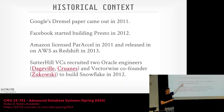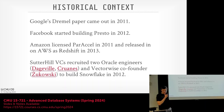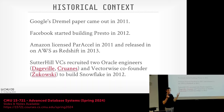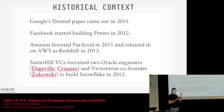Snowflake was written from scratch while Redshift was based on ParAccel, which was basically going bankrupt hoping Amazon would acquire them — Amazon just acquired the source license instead. Around this same time, a VC firm out of Silicon Valley called Sutter Hill decided to build a new cloud-native database startup. They brought together two prominent Oracle engineers and Marcin Zukowski, the Vectorwise developer from the paper you read, gave them money, and said go build a cloud-native warehouse — Snowflake.